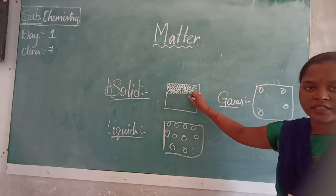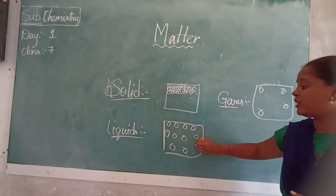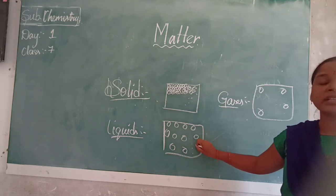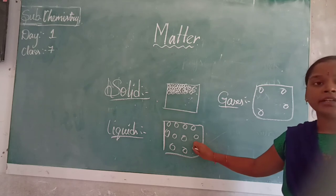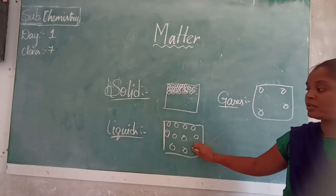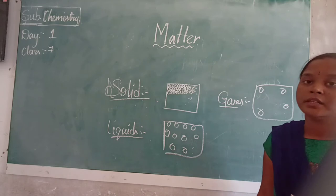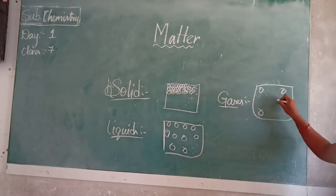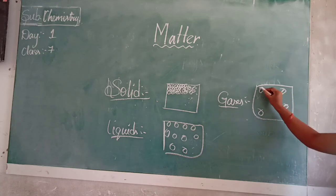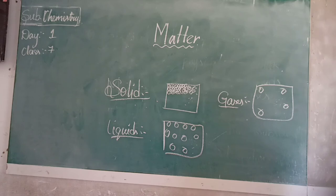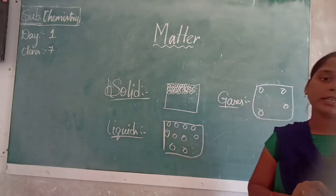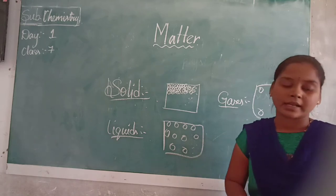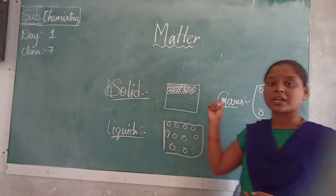So here solids will be having definite shape, definite volume and size. Whereas liquids do not have a definite shape and size, but it just occupies the shape of the container. Solids cannot diffuse. Whereas liquids can diffuse based on the characteristics of the molecules - because as the space is more, there is a chance to diffuse. Whereas gases just do not have any shape, we cannot touch them but we can feel them. As there is more space, they can diffuse easily. Can we change solids to liquids, liquids to gases, gases to again liquids? We can change - we have learnt this in the water cycle.